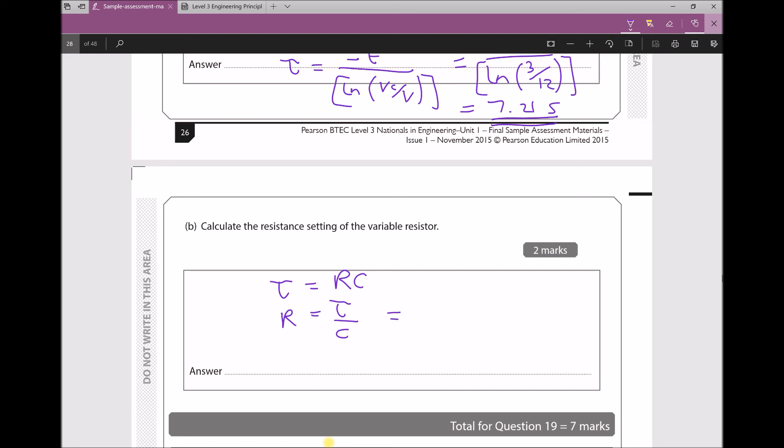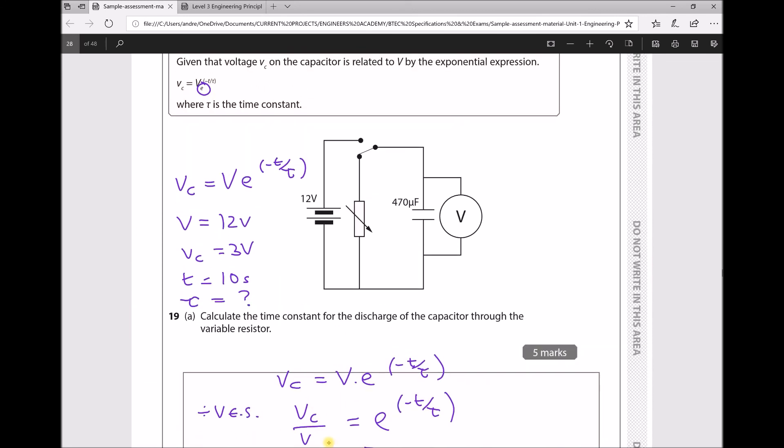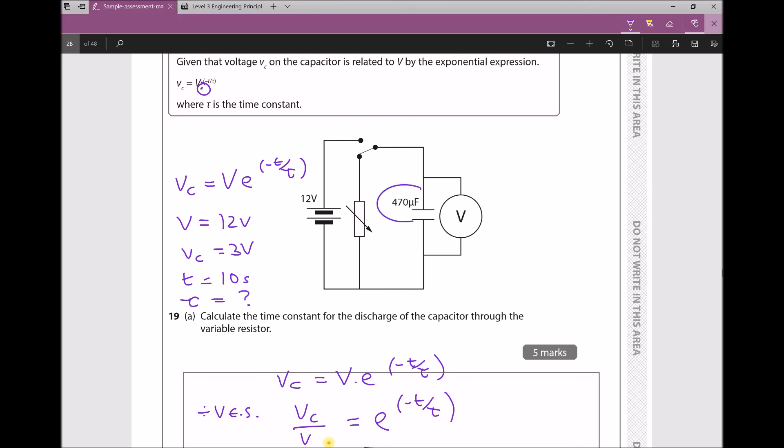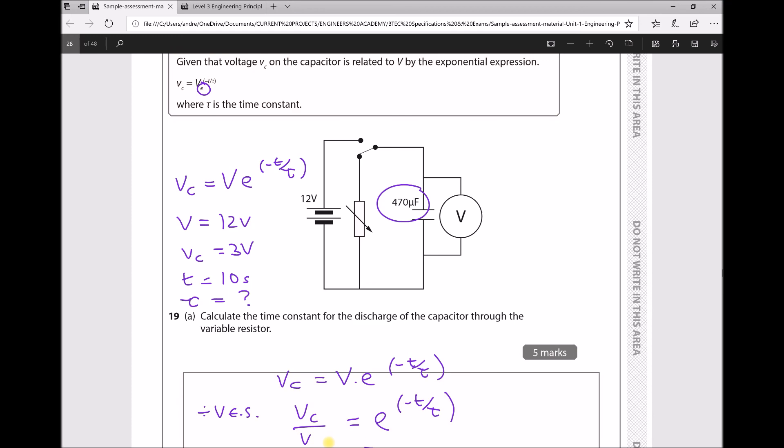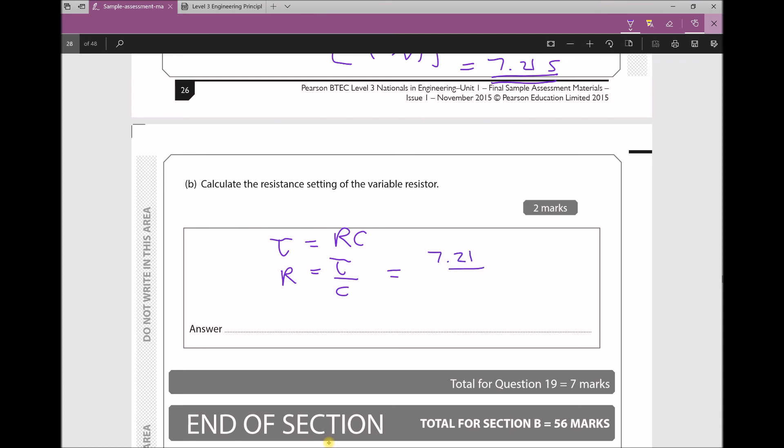Let's scroll back up and double check our capacitance. We see from the question we have a 470 microfarad capacitor. So what we need to do is take our time constant of 7.21 and divide that by 470 microfarads, or 470 times 10^-6 farads. Therefore, the resistance on the variable resistor is 15,348 ohms, or to tidy that up, that's the same as 15.3 kilo-ohms.